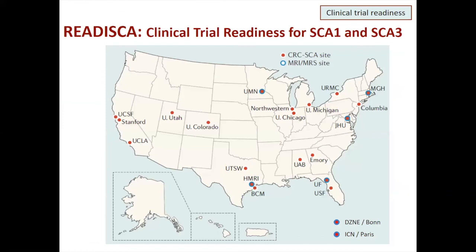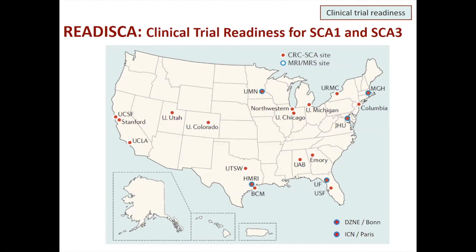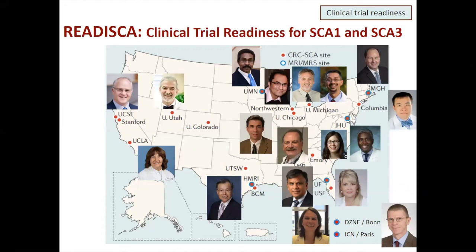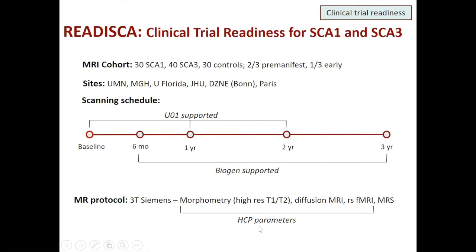The last piece of this journey is a U01 clinical trial readiness study currently ongoing. We have about 20 clinical sites and six imaging sites including MGH, plus two European sites, targeting SCA1 and SCA3 — the most common and fastest progressing SCAs — with a substantial number of pre-manifest individuals. The U01 supports baseline, one-year, and two-year acquisitions with industry support adding three-year follow-up and six-month scans. We use 3T Siemens scanners and acquire morphometry, diffusion, resting-state fMRI using HCP lifespan protocol, and MRS.